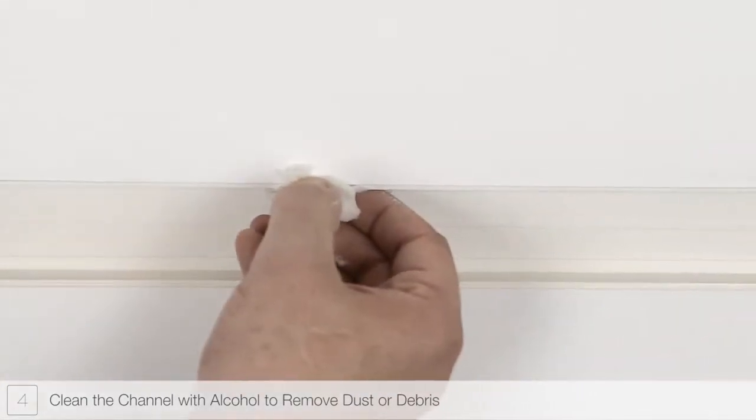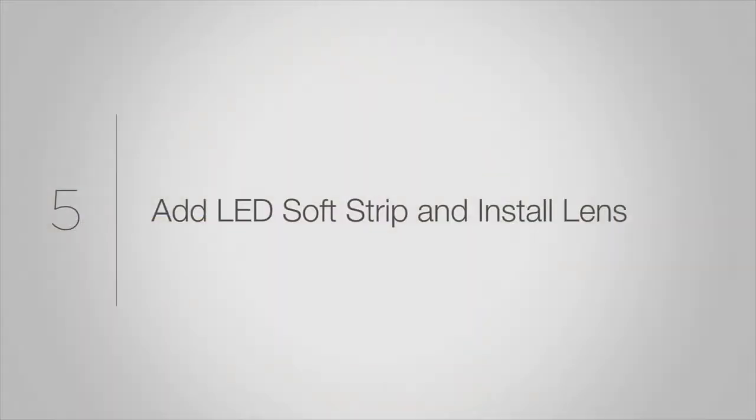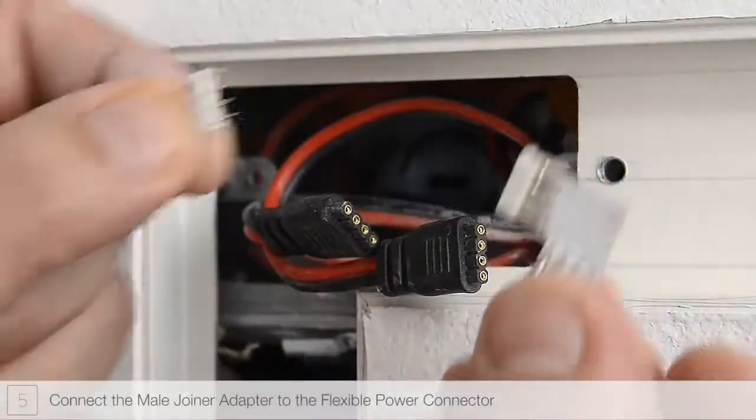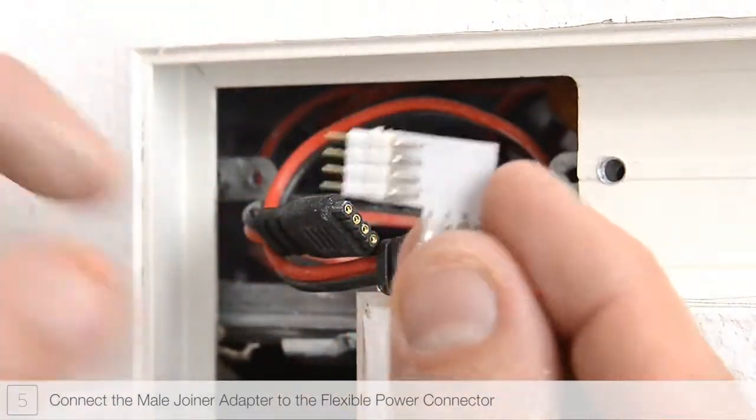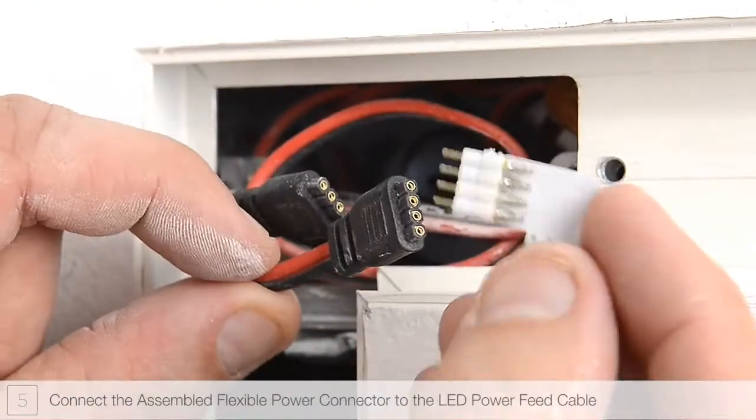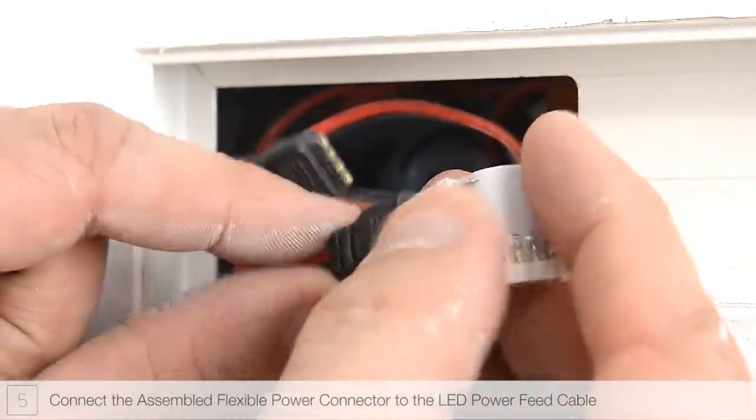Step 5. Connect one male joiner adapter to the end of the first flexible power connector. Connect the assembled flexible power connector to first LED power feed cable.